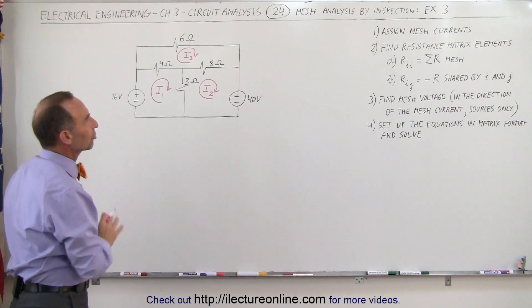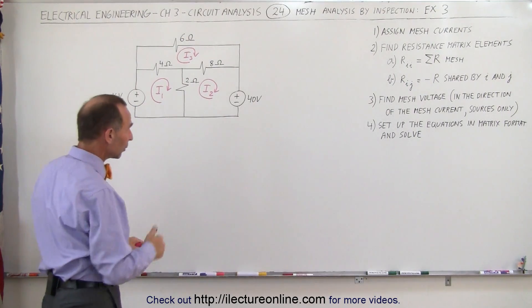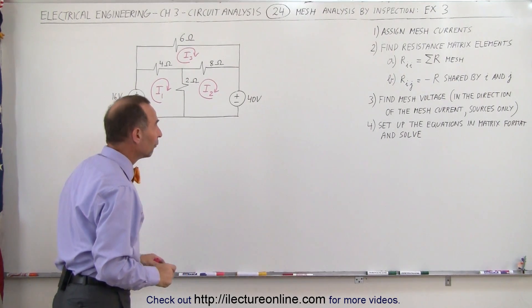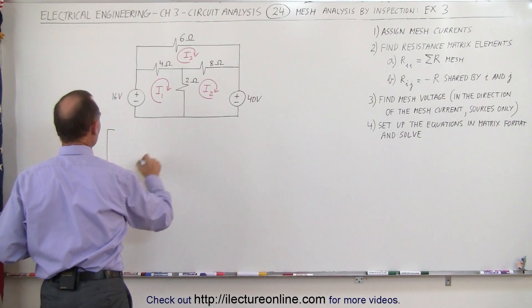We have three mesh currents, which means we're going to have a 3x3 matrix. Next, we're going to find the resistances for those matrix elements. We end up with a resistance matrix here.